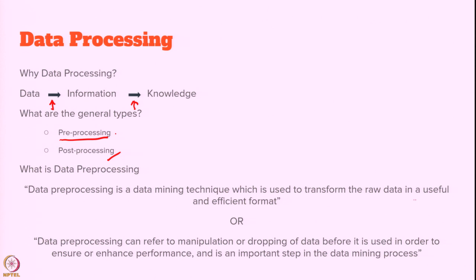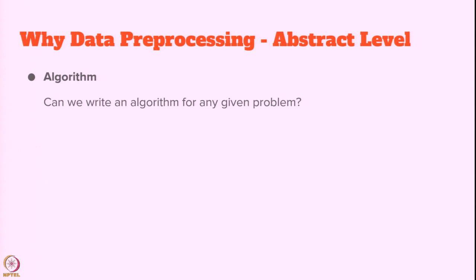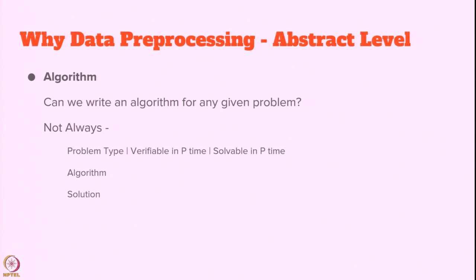Now there are a few terms: one is 'useful and efficient format' — what do you mean by useful, and what do you mean by efficient format? In another definition there is something called 'ensure or enhance performance.' To understand this, we will try to understand some concepts of computer science at an abstract level — what you mean by useful and efficient format, or ensuring and enhancing performance of a given algorithm or method.